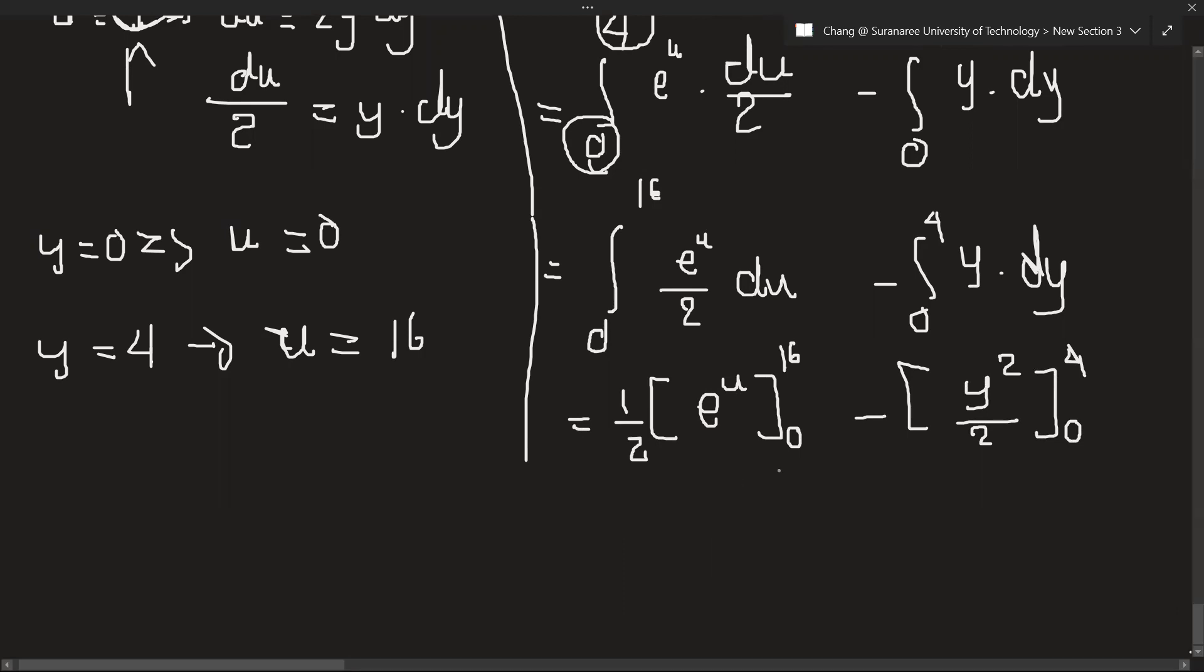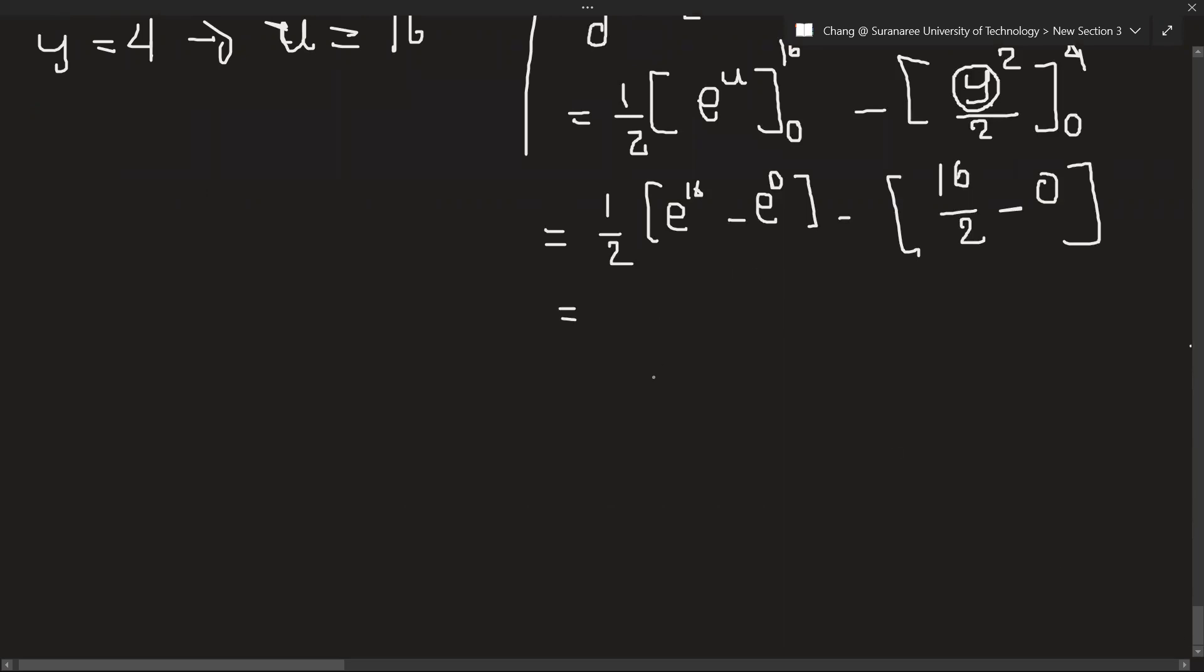So let's put the values. So here is 1/2 times (e^16 minus e^0). Minus when we put y as 4, 4 squared will be 16 over 2, minus 0. So 1/2 times (e^16 minus 1) minus 8.